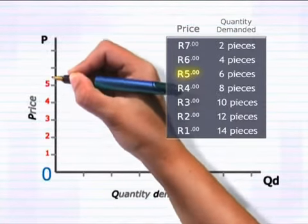Now we plot the corresponding price and quantity demanded values. We'll start with the price values. Moving up from the origin, our first value is one rand, followed by two rand, three rand, four rand, five rand, six rand and of course seven rand. And I do the same for the quantity demanded values, which start with the quantity of two and four, six, eight, ten, twelve and fourteen.